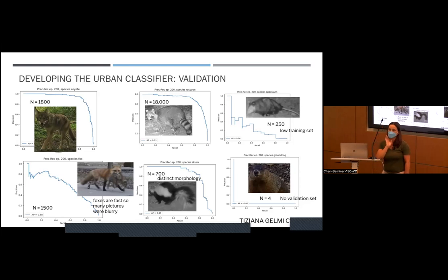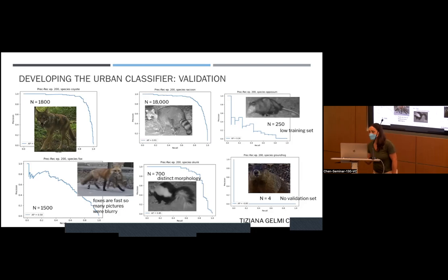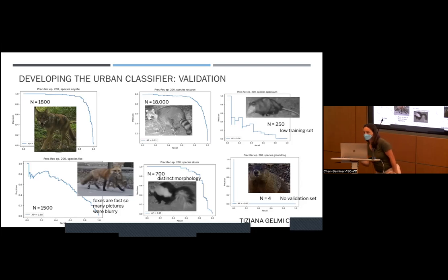There was actually a breed of dog that was being recognized as a skunk very often, and another breed recognized as deer very often. Groundhog was poorly classified because we had very few pictures — maybe only four — not enough data to even expect anything there.